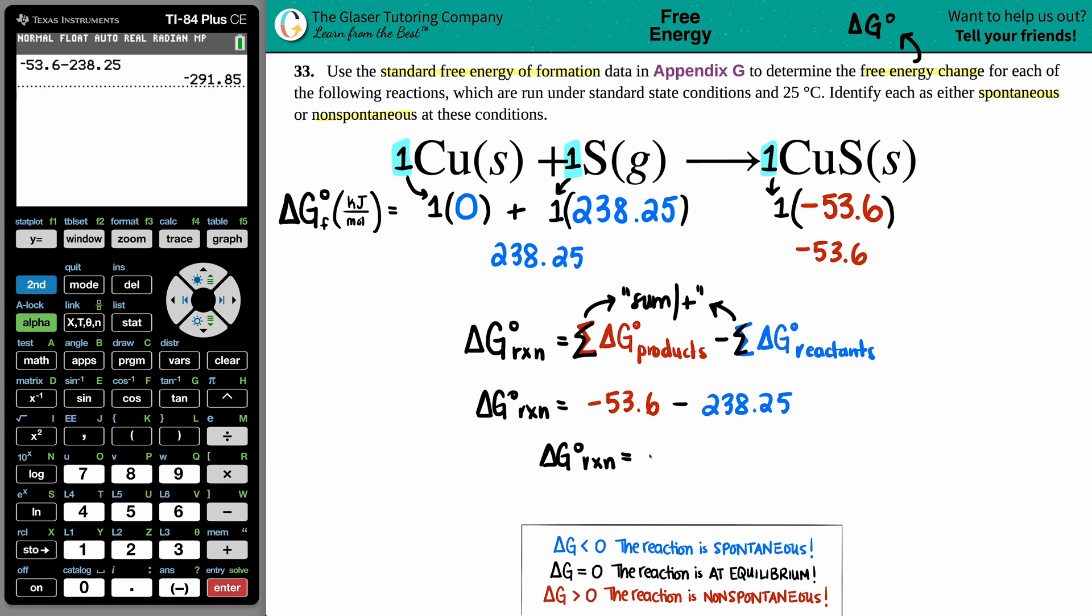And now you get an answer of negative 291.85. But according to sig figs, since this value only has it to the tenths place and this has it to the hundredths place, we can only round to the tenths place, the lower amount. So in this case, I would have to take that 85 and turn it into a nine. The five rounds the eight up to a nine. The unit here would be just kilojoules because these values, these coefficients that you're multiplying by, are mole values. So if you have kilojoules over mole and you're timesing by a mole, those mole values go bye-bye and you're just left with kilojoules.